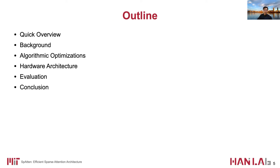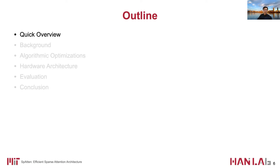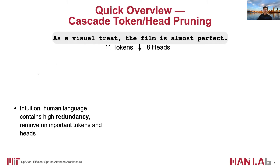Here is the outline of this presentation. We start with a quick overview of our core approaches. The first approach is cascade token and head pruning. The intuition is that human languages feature high redundancy, so it is desirable to find useless information and remove their computations.